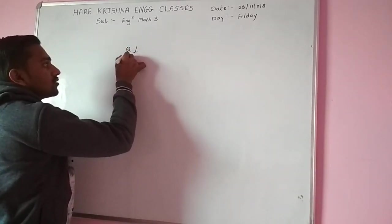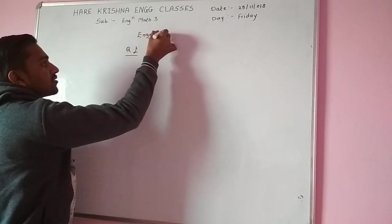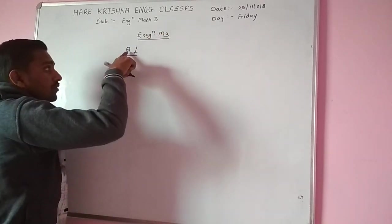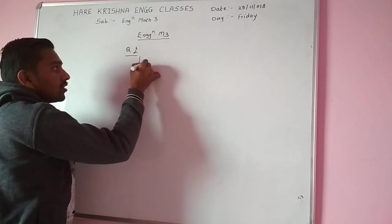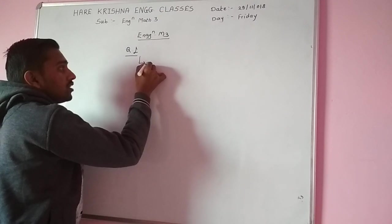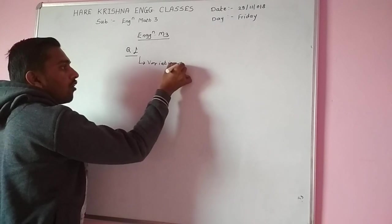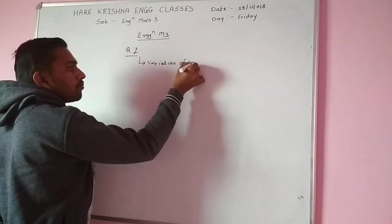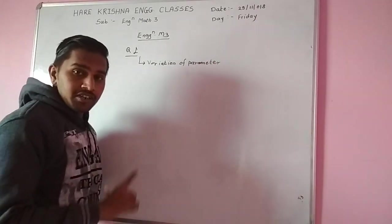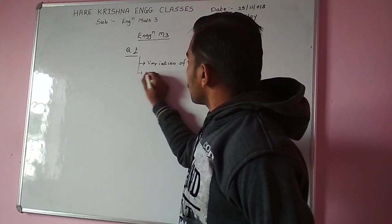Now today which we have seen, question number first is engineering mathematics. In question number first, the most important part is variation of parameter. Variation of parameter is the most important method.